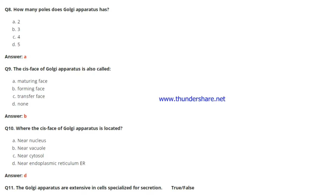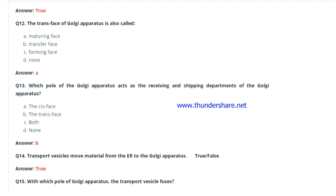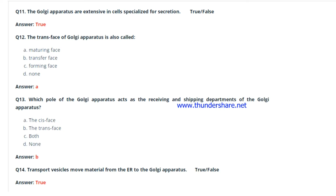Question 9: The cis face of the Golgi apparatus is also called what? The answer is the forming face. Question 10: Where is the cis face of the Golgi apparatus located? The answer is near the endoplasmic reticulum — only the cis face, not the trans face, is located near the ER. Question 11: The Golgi apparatus is extensive in cells specialized for secretion — true or false? This is absolutely true.